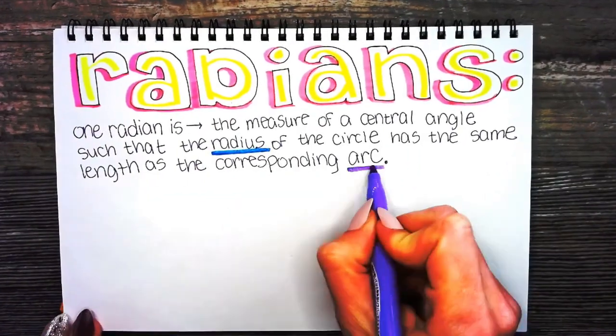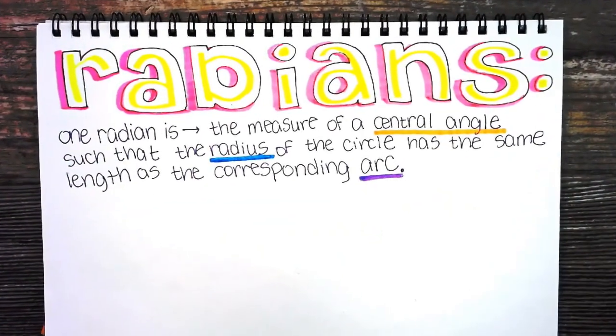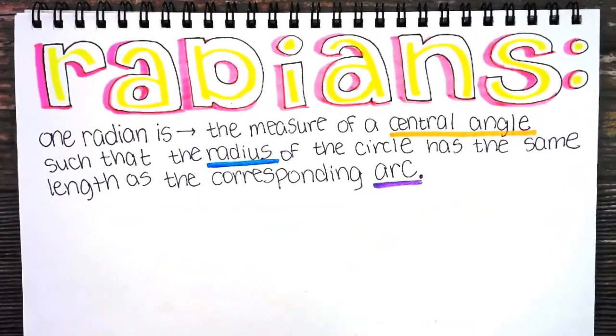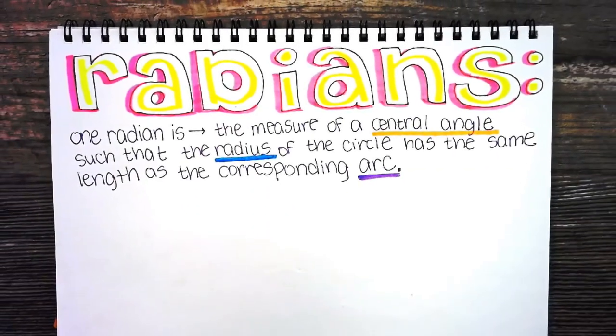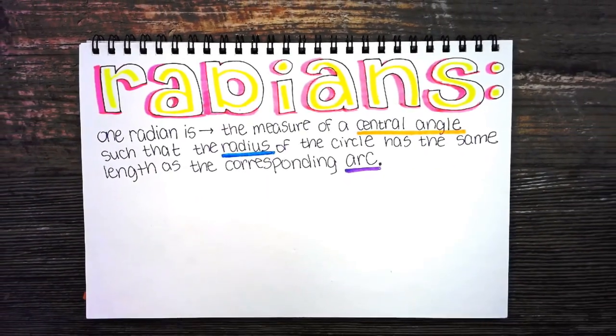Radians. One radian is the measure of a central angle such that the radius of the circle has the same length as the corresponding arc.